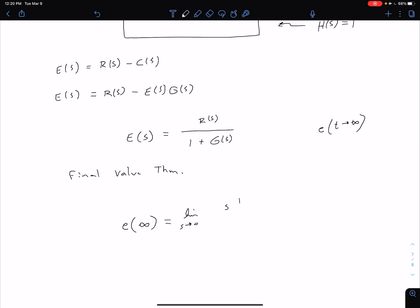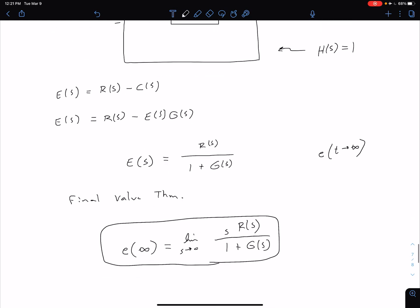Our E of S is just that R of S over 1 plus G, so we get S times R of S in the numerator divided by 1 plus G of S in the denominator. This is our general equation for our unity feedback system.